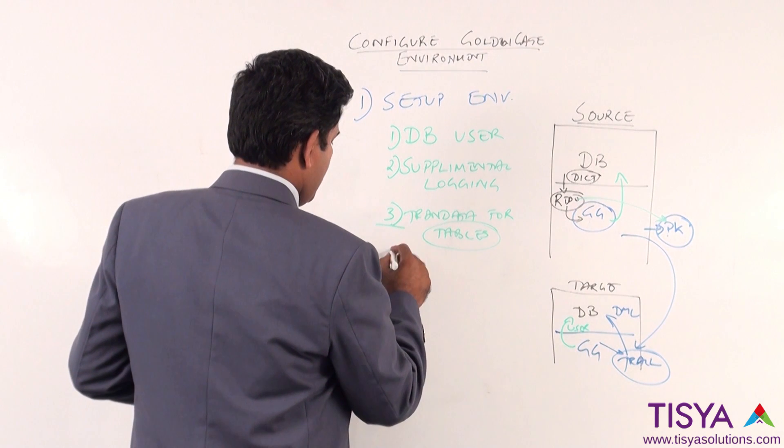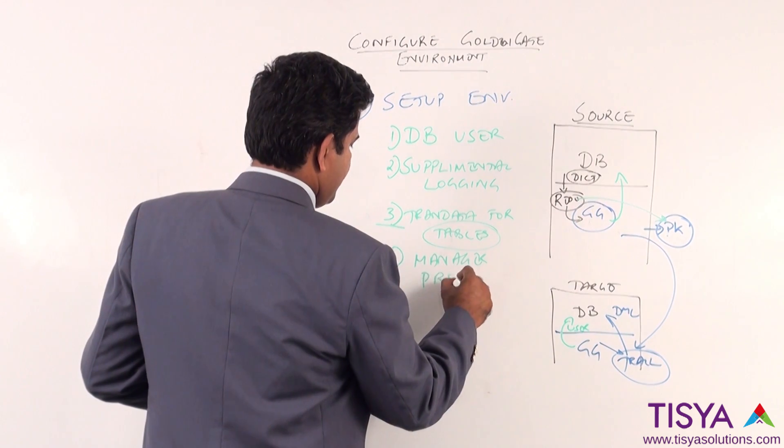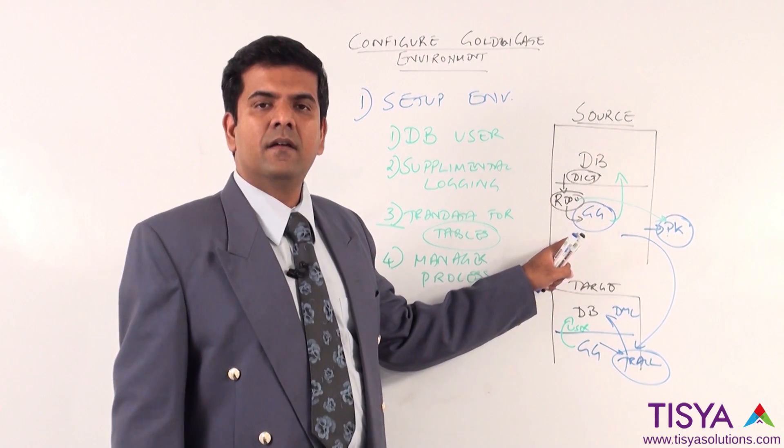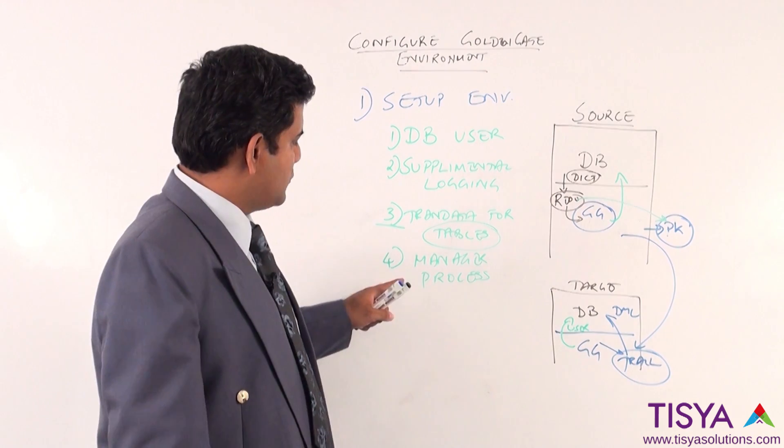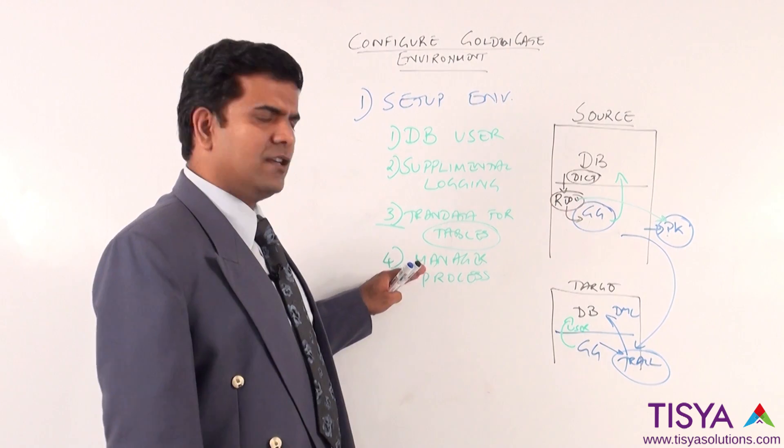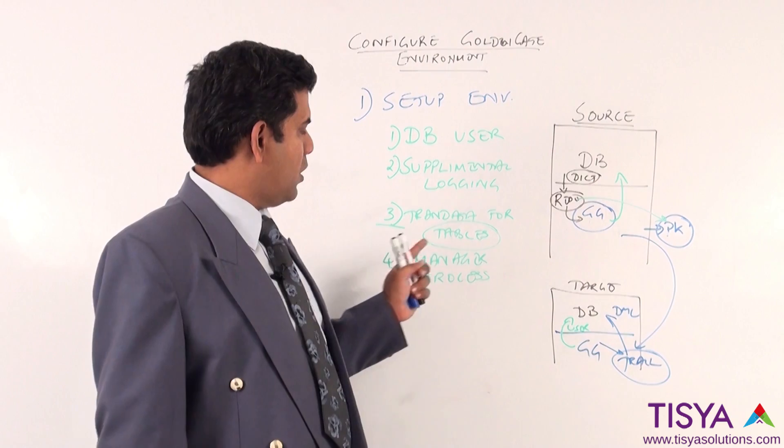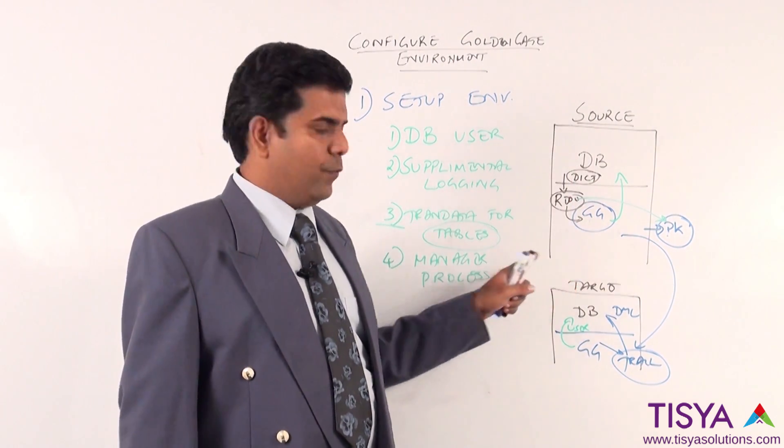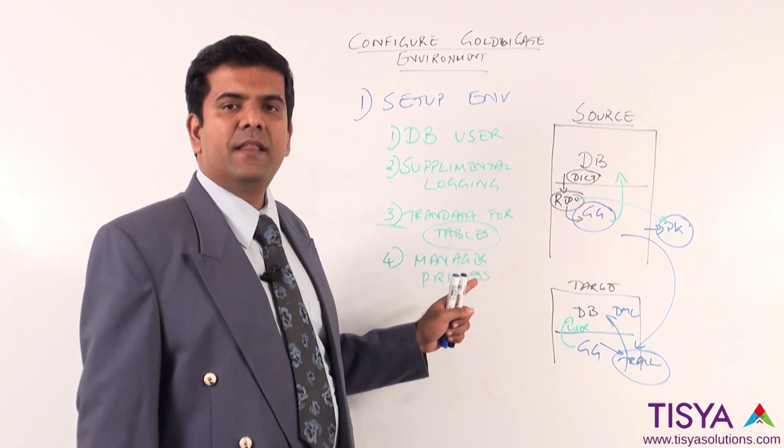The fourth step in the setup is to configure the manager process. Please remember, the manager process should be started and running if you need to start any extract or replicat in both environments. Specifically about what is to be configured in the manager process is given in the PPT deck. But the manager process is like the root process for golden gate which will have information about on which port the manager is running, which are the free ports that are available on the source which the manager process can use to start processes etc.